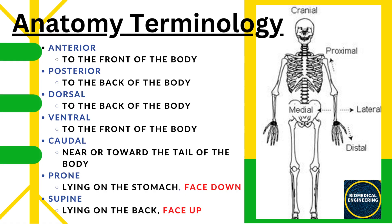Now let's talk about some common anatomy terminology. Please refer to the diagram on the right. Anterior refers to the front of the body, while posterior refers to the back. Dorsal refers to the back or upper surface of an organism, while ventral refers to the belly or front. Caudal refers to the tail end, prone refers to lying face down, and supine refers to lying face up.